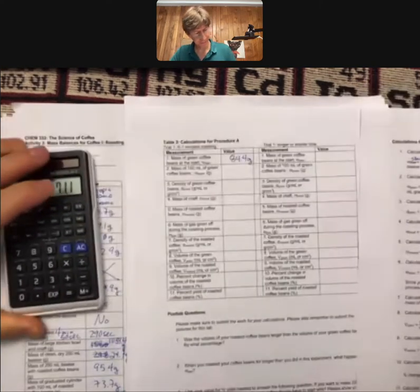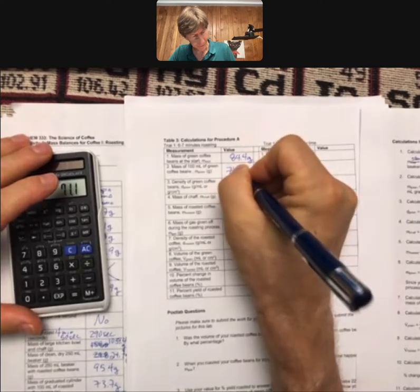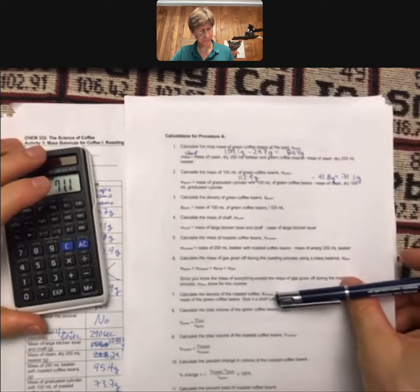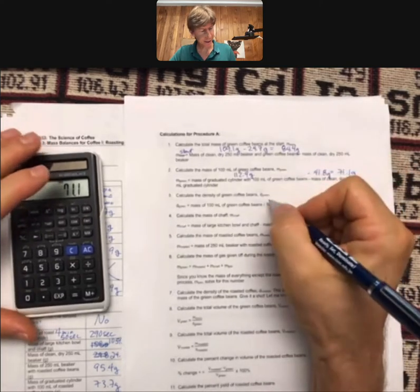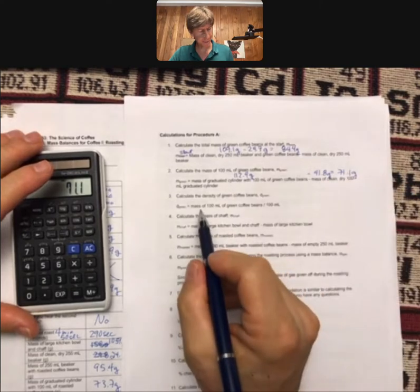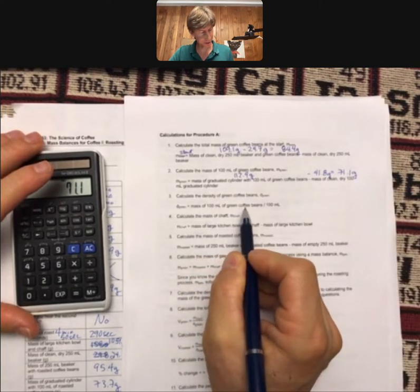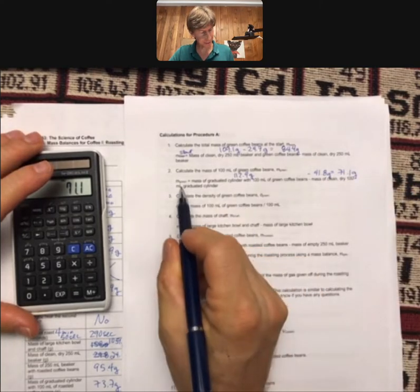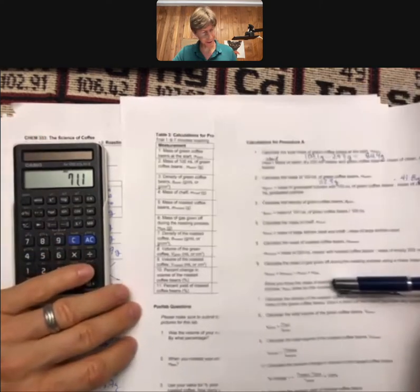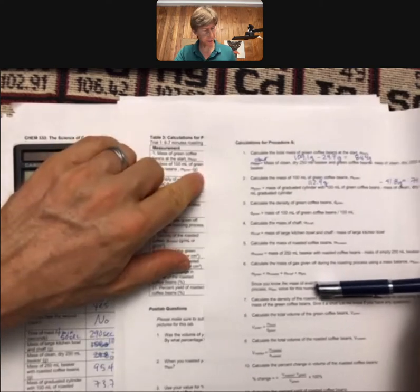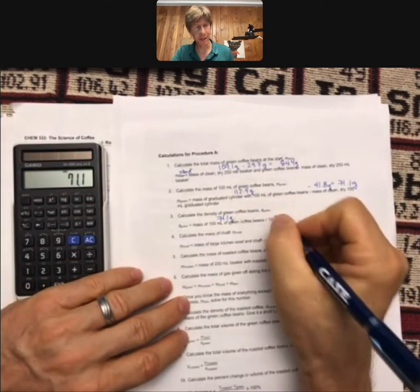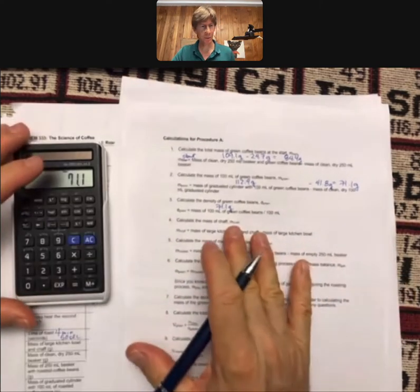Okay, continuing on. Calculate the density of green coffee beans, d green. That's going to be the mass of 100 milliliters of green coffee beans, which is m green, divided by 100. So let me check this out. I have 71.1 grams divided by 100 milliliters. That will give me a density.